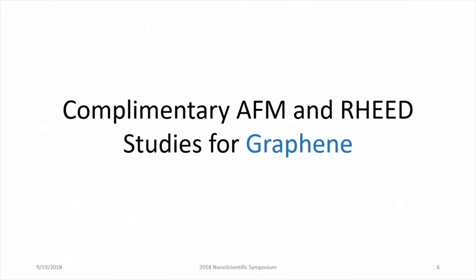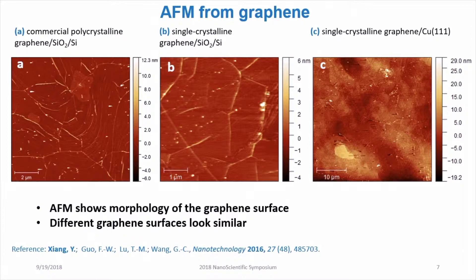To give some concrete examples, let me talk about the complementary AFM and RHEED study of graphene. These are three AFM images taken from three different graphene samples. The first one is commercial polycrystalline graphene.